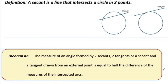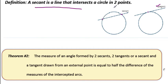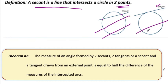Now we need to define what a secant line is. We've seen tangent lines before — a tangent is a line on the exterior of a circle that only touches in one place. A secant line touches in two places. The definition: a secant line is a line that intersects a circle in two points. It goes right through the circle. Those are all secant lines.